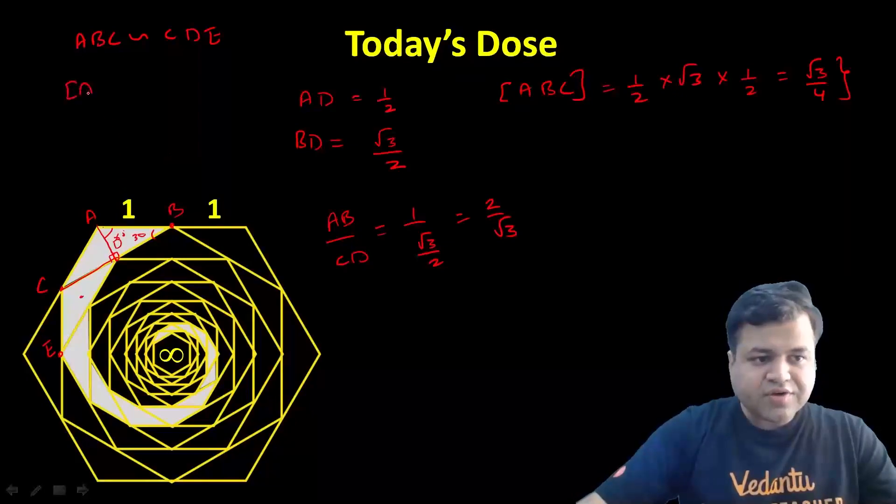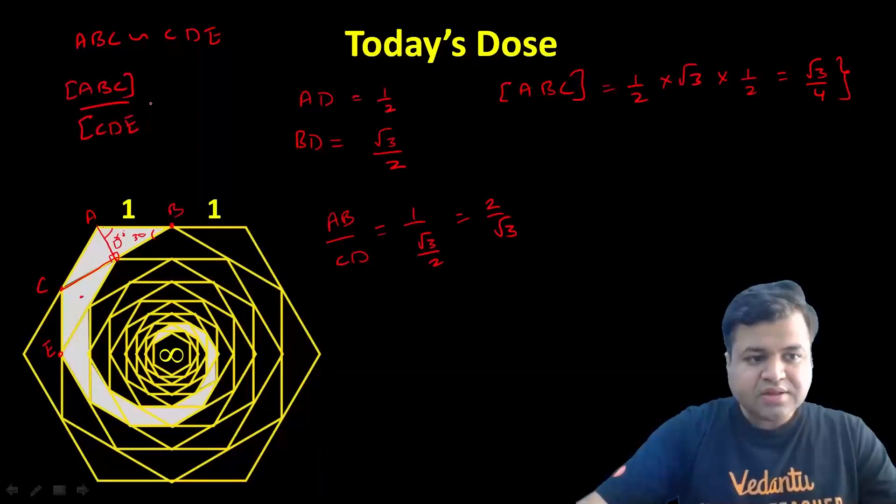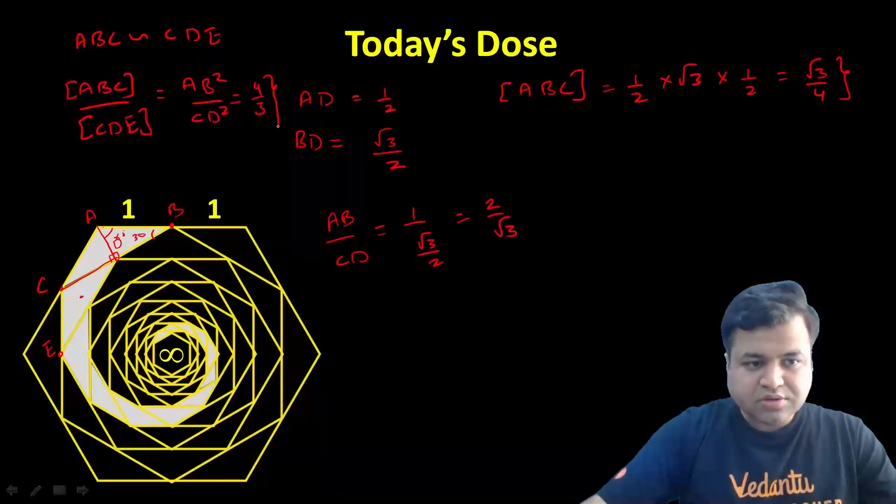So we can say area of triangle A upon area of triangle C equals AB squared upon CD squared. We know its value, so that ratio should be 4 upon 3.